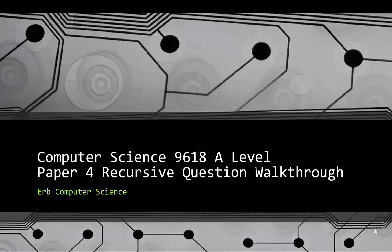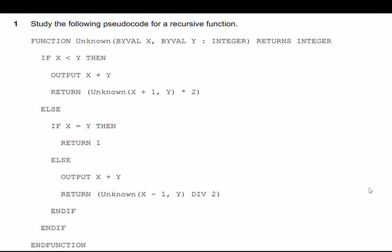In this video for Computer Science 9618 A-level, we take a look at another Paper 4 question, this time focusing on a recursive question. Let's go ahead and walk through it together so you get as many points as you can and pass that Paper 4 exam.